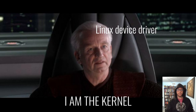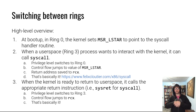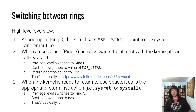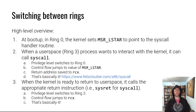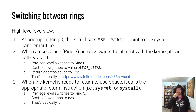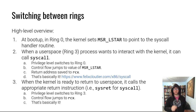When things aren't going wrong, how do you switch between rings in Linux on x86-64? At a high level: your kernel boots in ring 0 in supervisor mode. As it boots, it sets the MSR LSTAR register to point to a routine in the kernel — basically called enter_syscall — which handles the syscall when a user space process wants to interact with the kernel.